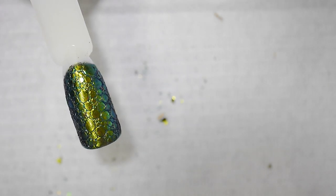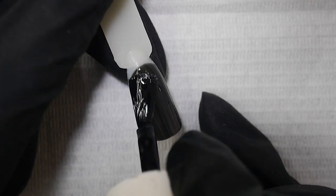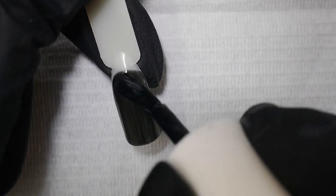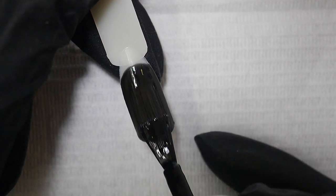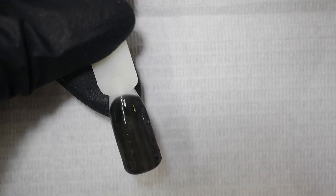First I'm going to create this chrome snake skin look. I'm starting with two coats of black cured between each layer. I'm then coming in with a non-wipe top coat, or in this case I've used Lysente's Layer It and Cure It.